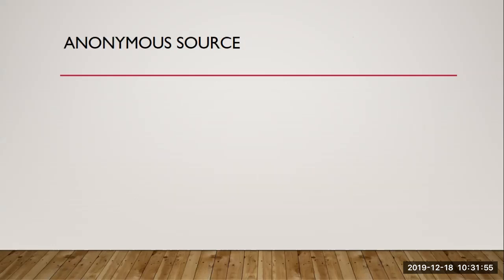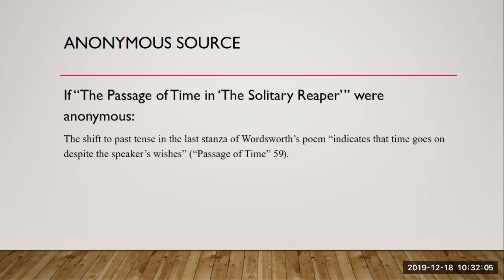What if your source lists no author? For instance, sometimes newspaper columns have no byline. In this instance, list a shortened version of the title of the piece, appropriately marked with quotation marks or italics depending on the kind of source. If the passage of time in 'The Solitary Reaper' were anonymous, you would construct your quote and citation like this, with only a shortened version of the title appearing along with the page number.